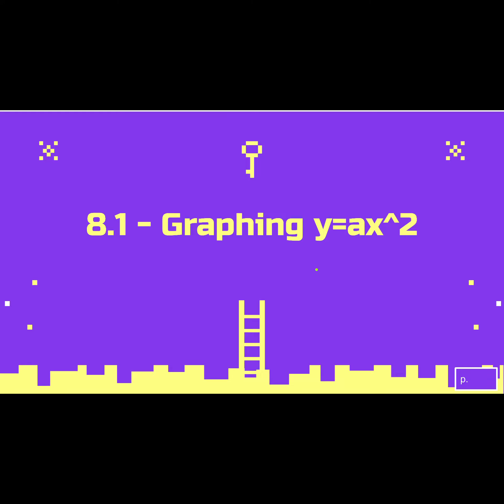Alright, 8.1 — graphing y equals ax squared. They don't let me write 'squared' so a to the x squared would look like this, where a would be just a number, and x squared is x squared.